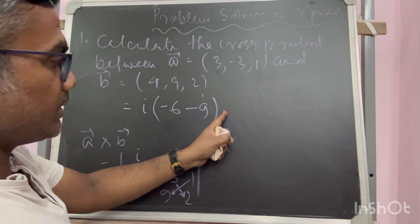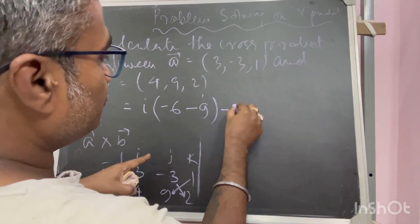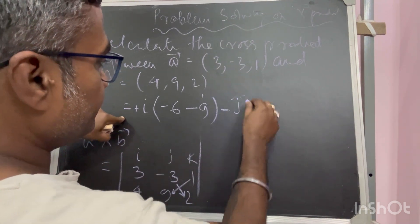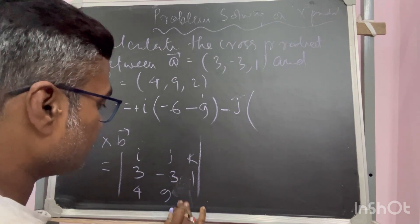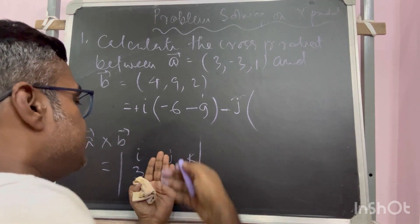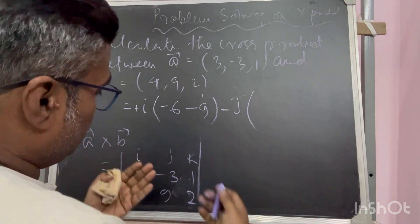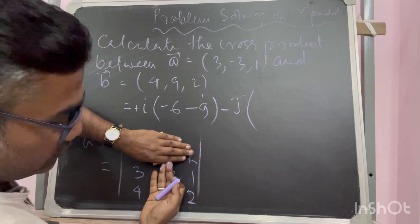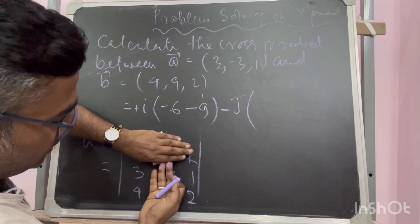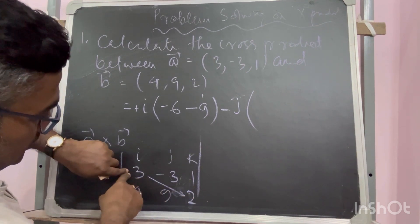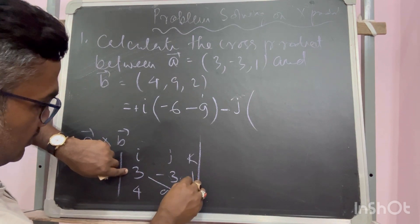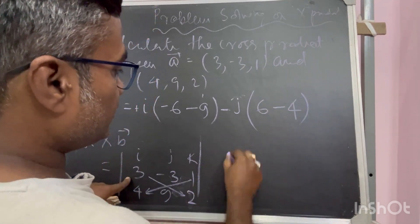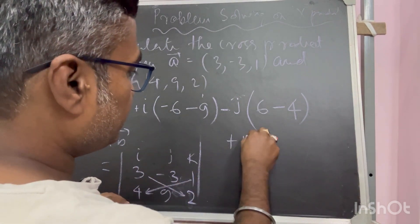In the next part, for the J unit vector, I automatically put a minus sign because the pattern is plus, minus, plus. For J, I hide the J column. The remaining part follows the same rule: from the upper left to the right. So this is (3 × 2) = 6, minus (1 × 4) = 4. The J part gives 6 - 4 = 2. This part is over. Next part: plus, minus, plus — this sequence you have to remember.